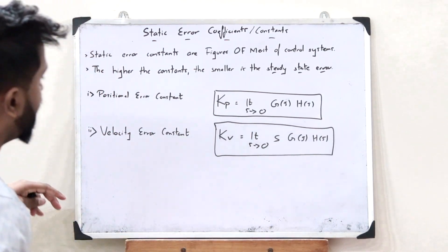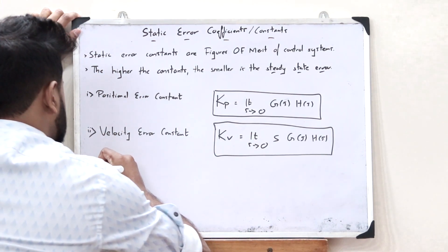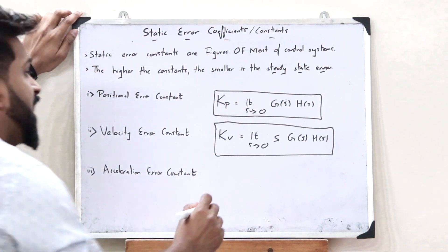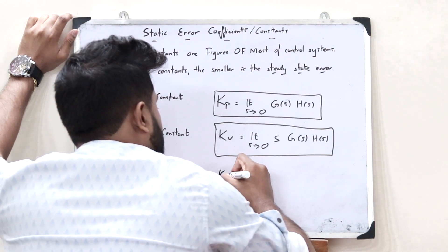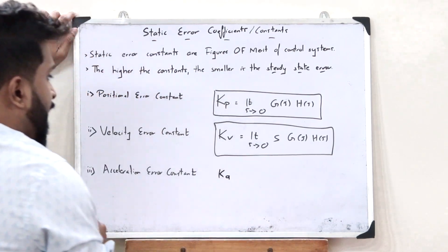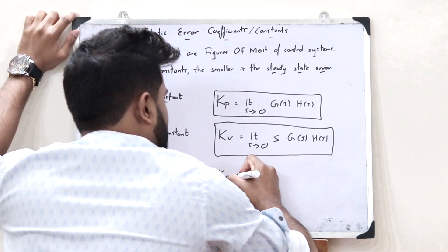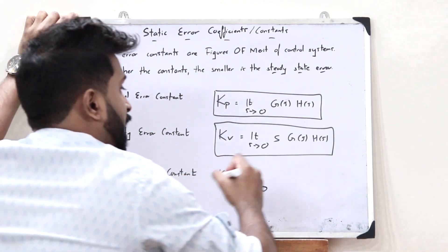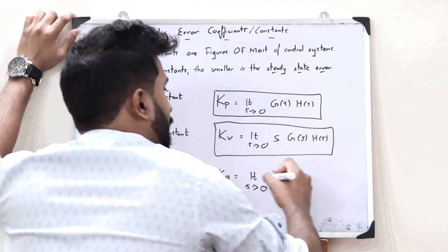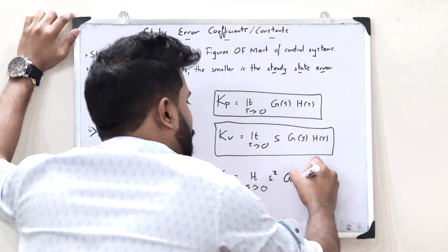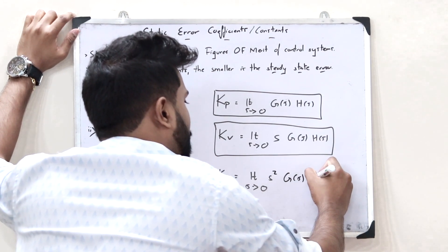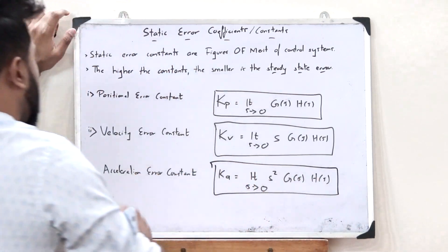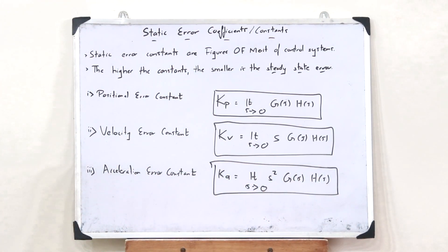And finally, we have the acceleration error constant. This acceleration error constant is represented by Ka, and it is given as Ka = lim(s→0) s²·G(s)·H(s). This is the value of the acceleration error constant.